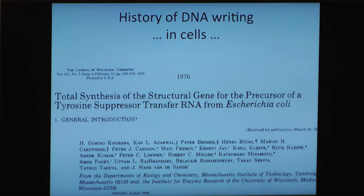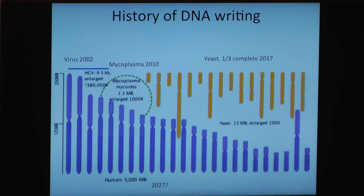The history of DNA writing in cells started around 1976 — the year I graduated from college — with Khorana's synthesis of the transfer RNA gene, and it's extended recently: virus in 2002, the Venter Institute's mycoplasma in 2010, and this year 2017 a third of the way through yeast, and maybe human by 2027. Note that the scale is enlarged one-hundred fold for one entry, one-thousand fold for another, and almost five-hundred thousand fold for another.